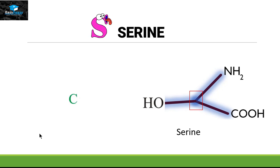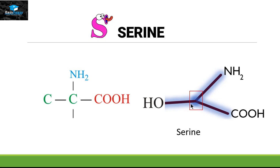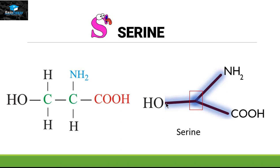Let's discuss the official structure of serine. This junction part is the alpha carbon, and carbon belongs to group four so it makes four bonds: the first with the amino group, the second with the COOH group, the third bond with another carbon in the fork structure — this carbon is attached to oxygen, and oxygen is attached to hydrogen. The remaining bonds are made by hydrogen to create stability. This is the official structure for serine.